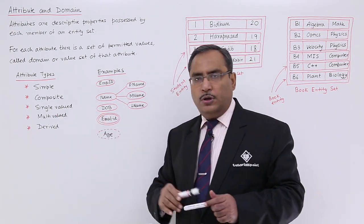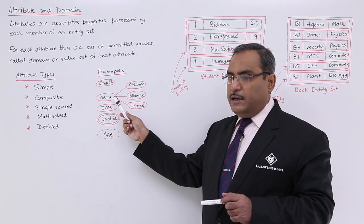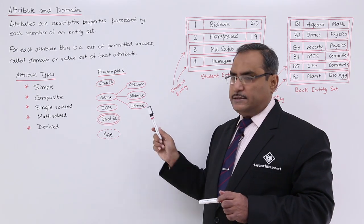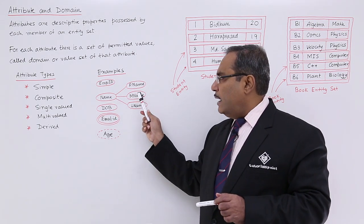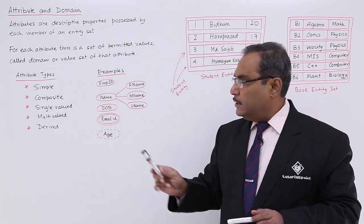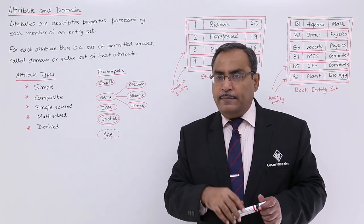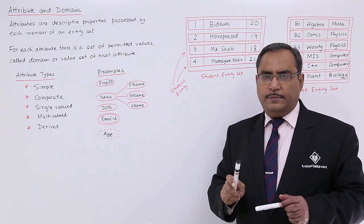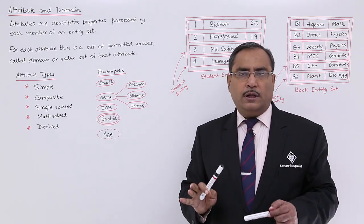Now, what is a composite attribute? Name is a composite attribute — you see that name can be divided into sub-attributes like first name, middle name, and last name. These are also attributes, and after splitting name I get these sub-attributes, which is why it is composite. But EMPID is not split, which is why it is called a simple attribute. If you decide to keep only name without splitting it into first name, middle name, and last name, then name can also be a simple attribute — it depends on the implementation.